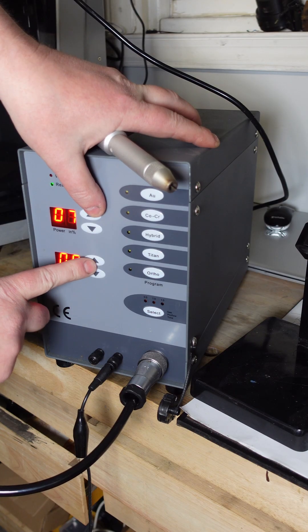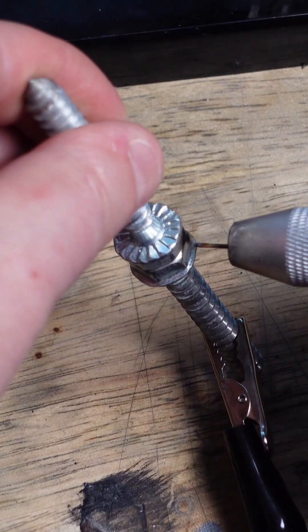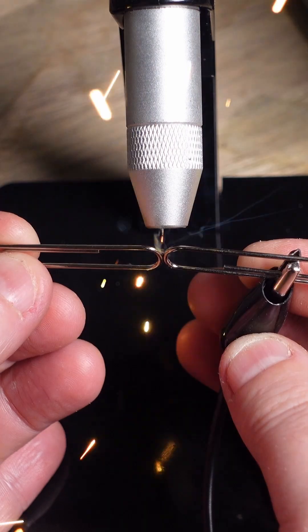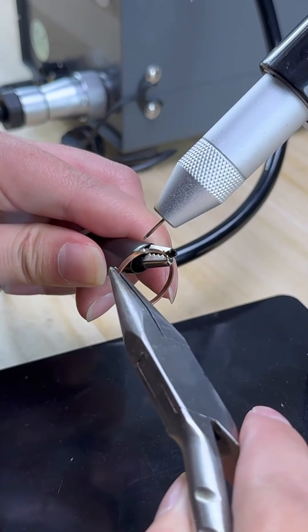So I recently did a review of this little PulseArc hobby welder, and a few people in the comment section said that it was too weak and useless for anything larger than tiny jump rings. I disagree.